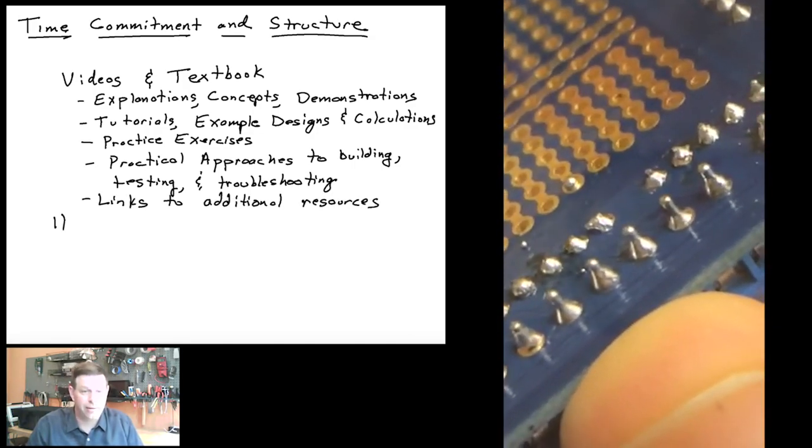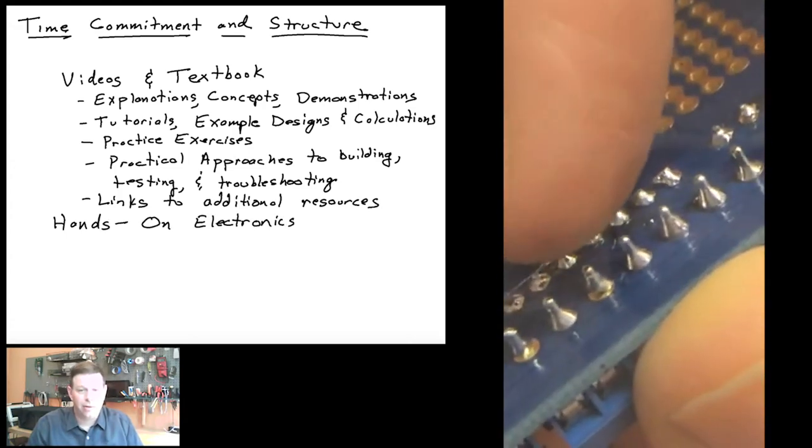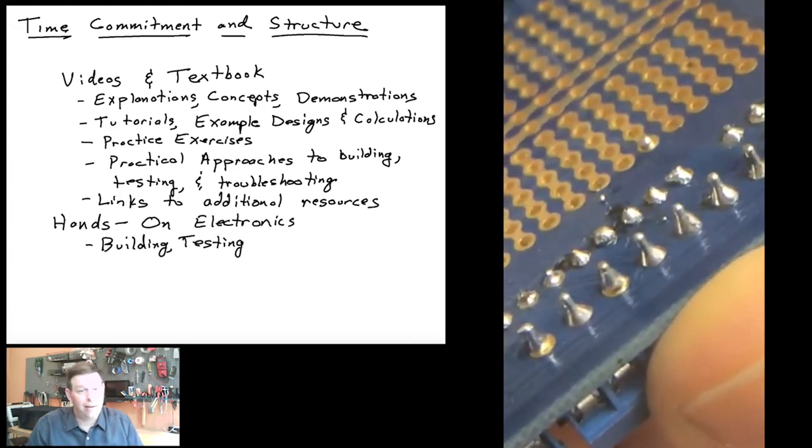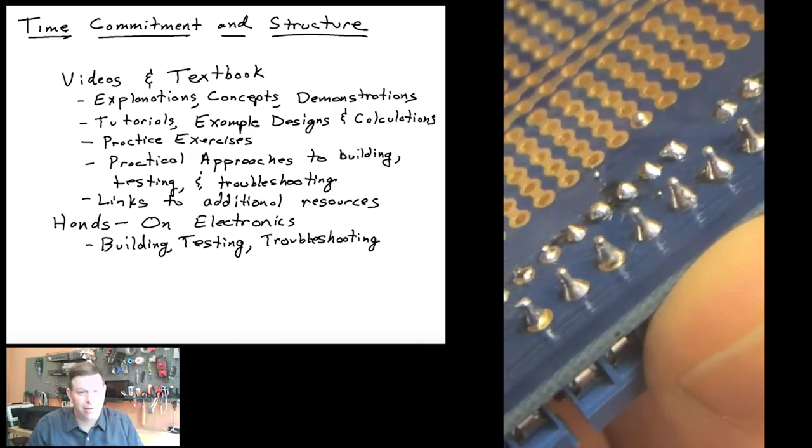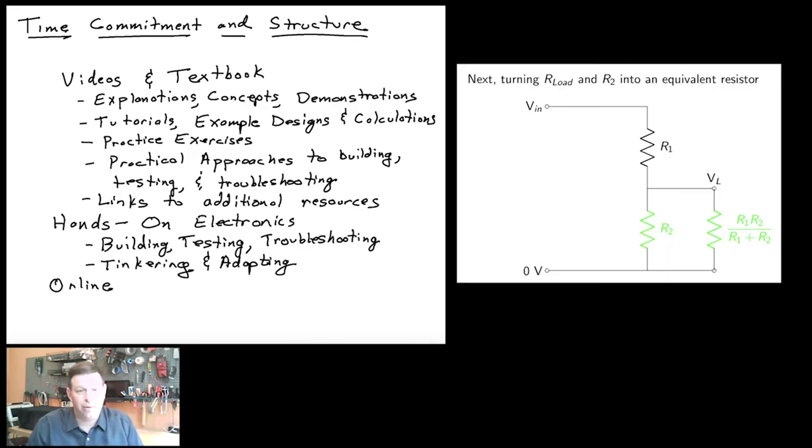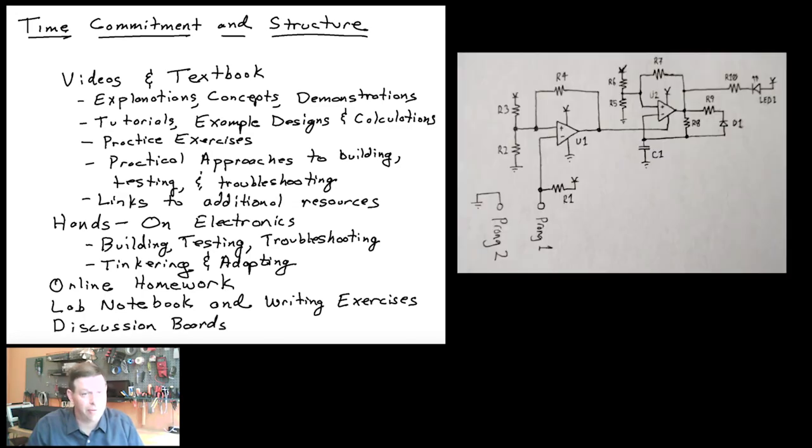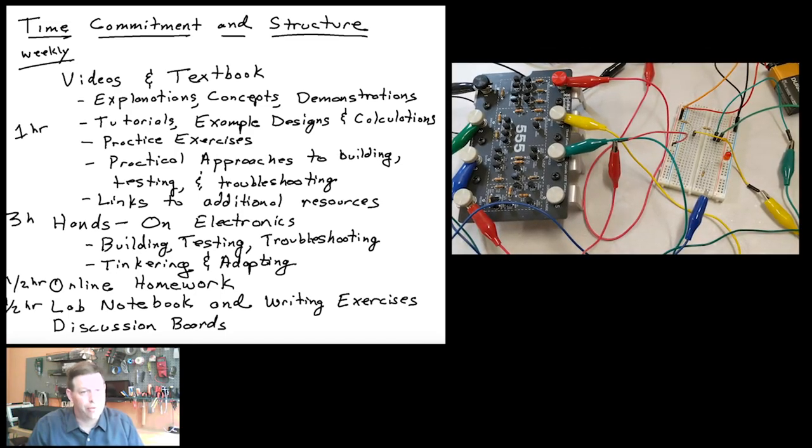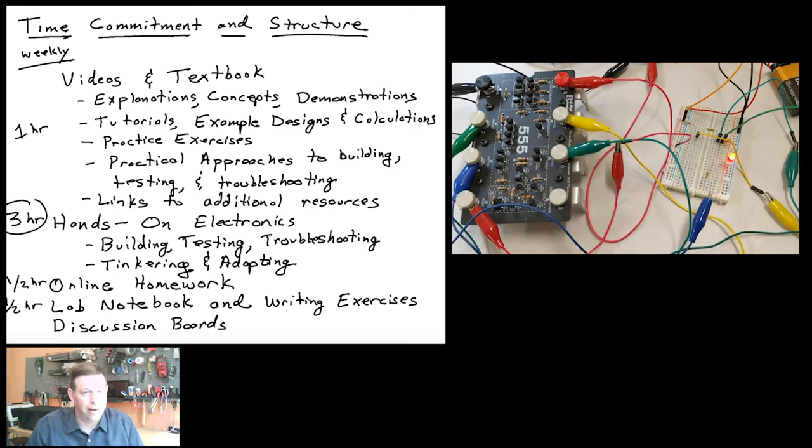The most important component of the class, of course, is building things yourself, troubleshooting them, testing them, and then also tinkering and adapting them to new things. There's a component of online homework and also a laboratory notebook and writing exercise requirement. Finally, there's some discussion boards to help you. All told, the typical student spends about five hours a week on this class, about an hour on the video and text, half an hour each on the online homework and documentation, and three hours in laboratory.